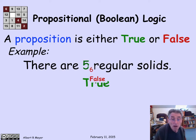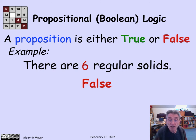If I change it to six, the assertion there are six regular solids is false. So that's a simple-minded example of two well-defined propositions, one of which is true, one of which is false.